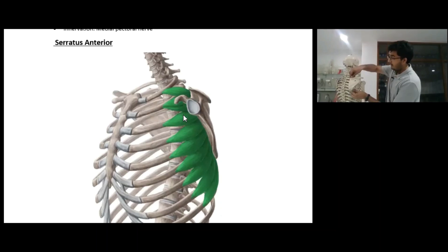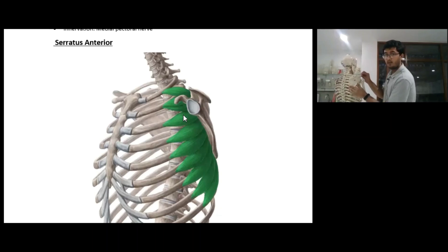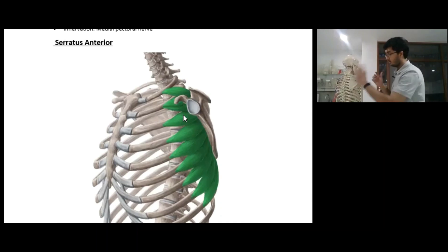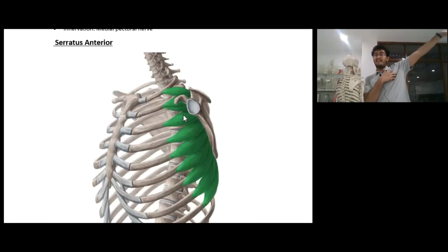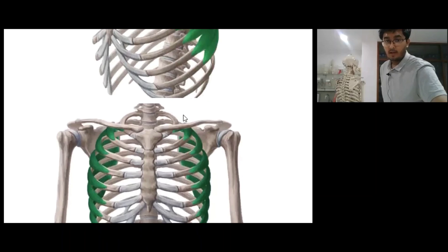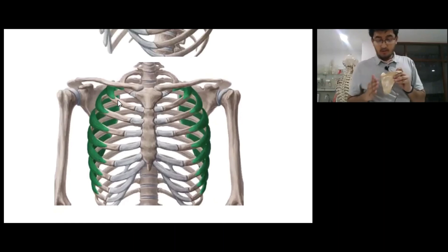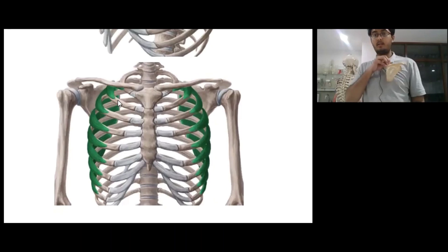When the serratus anterior contracts, it pulls the scapula downwards and in doing so it actually rotates the scapula. When the medial part contracts, it actually moves the scapula upward — this is called upward rotation. In doing so, it helps the humerus in abduction beyond 90 degrees. The origin is all along the ribcage and it inserts on the medial border of the scapula, causing the scapula to rotate upwards when it contracts.